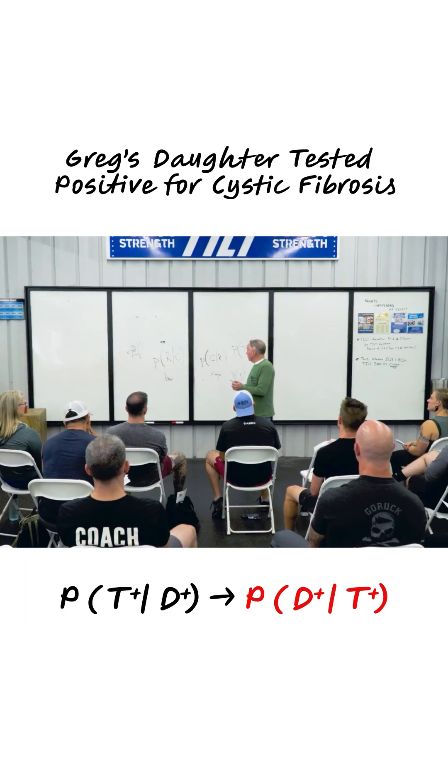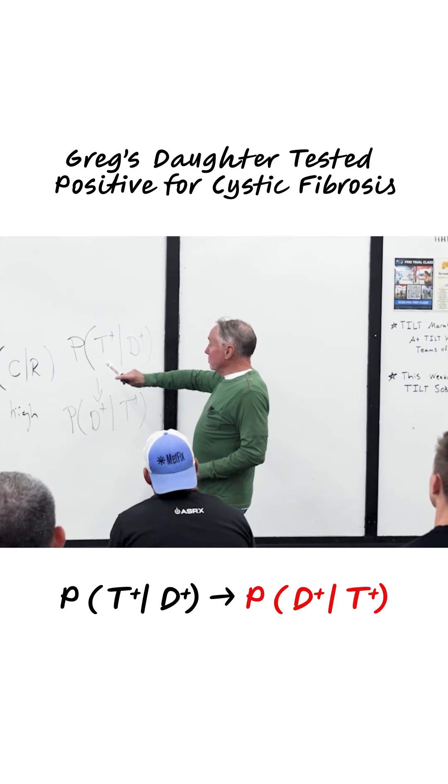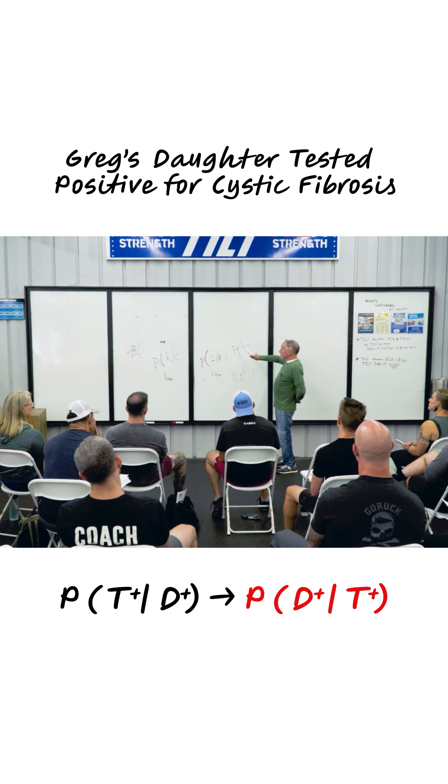What's the positive predictive value? That is, that's what they call this, the actual probability of having the disease given the test. So we're told that she's tested positive, and of those that have cystic fibrosis, 97, 98 percent will test positive.